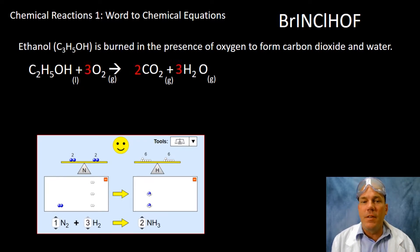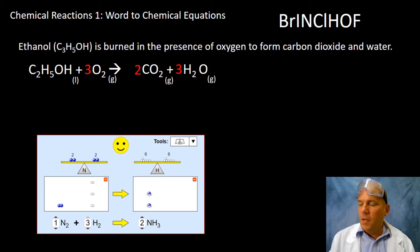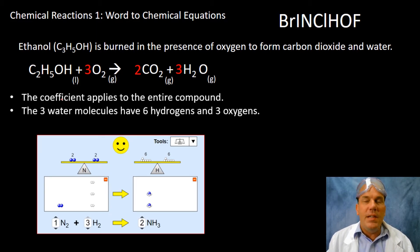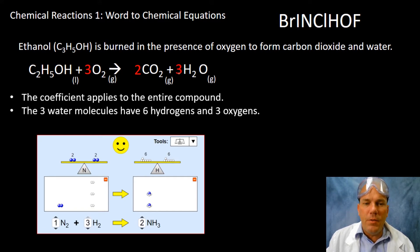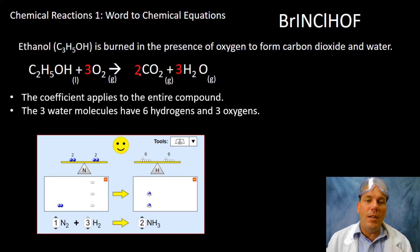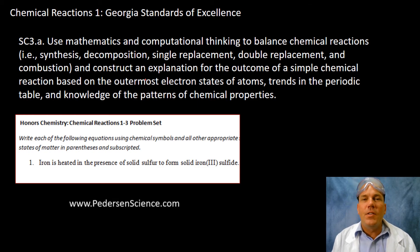Back to the combustion of ethanol: placing coefficients of 1, 3, 2, and 3 gives us a balanced chemical reaction — pause and make sure that makes sense. The coefficient applies to the entire compound: a coefficient of 3 in front of water means 3×2 = 6 hydrogen and 3 oxygen. The coefficient of 2 in front of CO₂ means 2 carbon and 4 oxygen. So all atoms are accounted for on both sides.